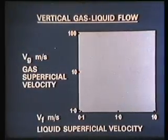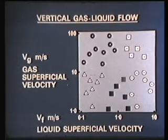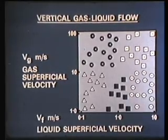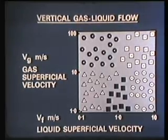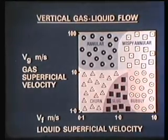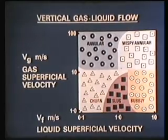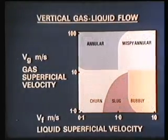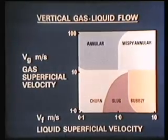If we do many experiments at different flow rates, each time identifying the flow pattern, we can build up a picture such as this. By looking at the points, it appears as if we have zones around which we can draw boundaries. This chart, which contains areas identified as specific flow patterns, is called a flow pattern map and is very useful because we can calculate, for given flow rates, what kind of flow pattern we would expect to obtain.